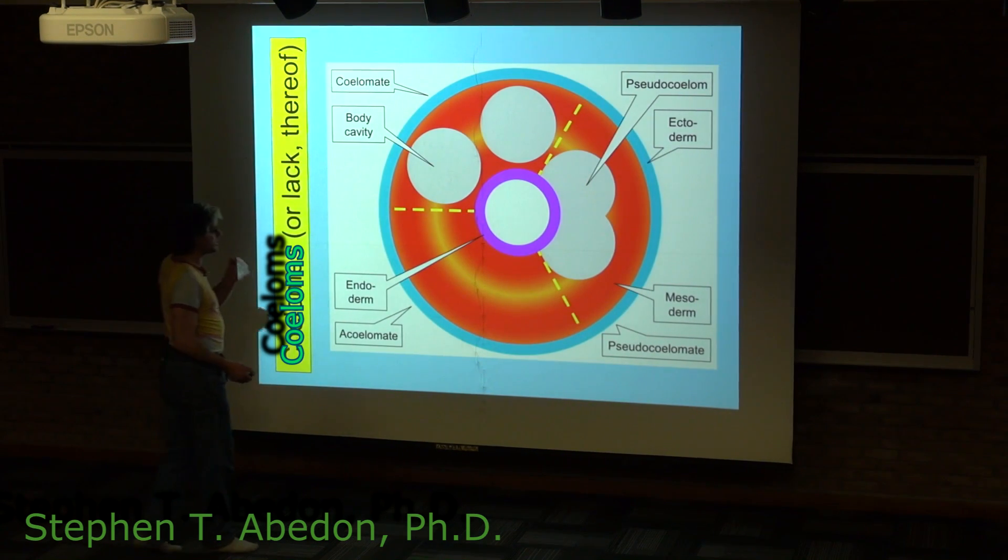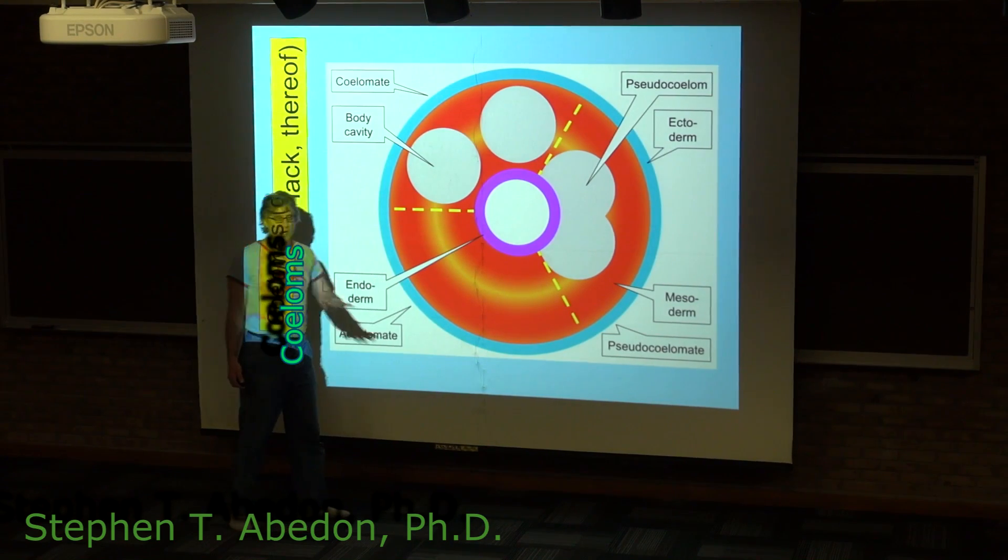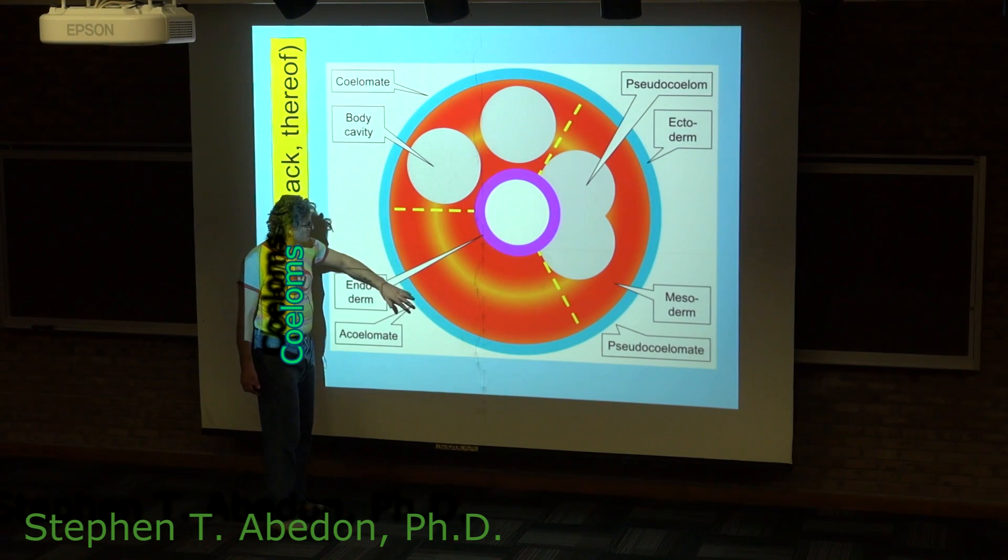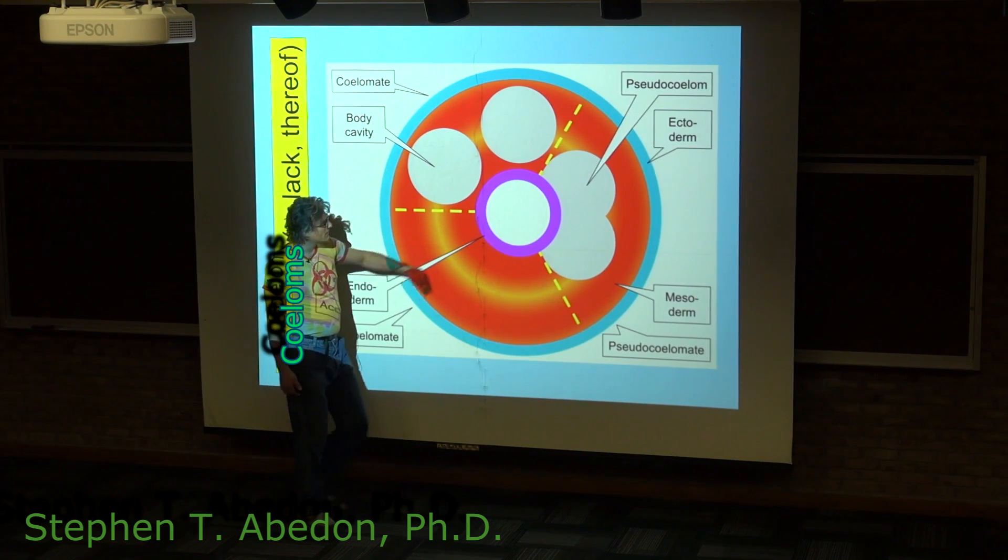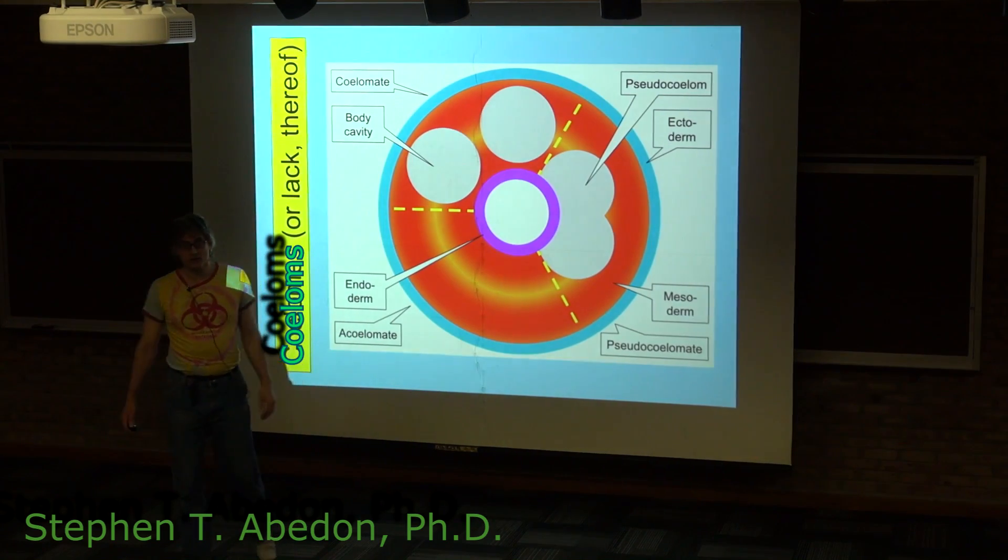This is showing a representation of a triploblastic animal in cross-section. This blue line here is representative of the ectoderm, the outside of the animal. This purple line here is representative of the endoderm.